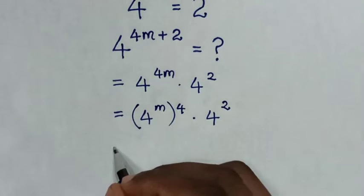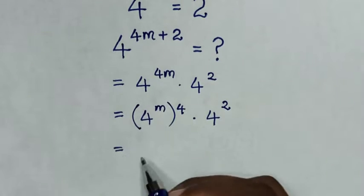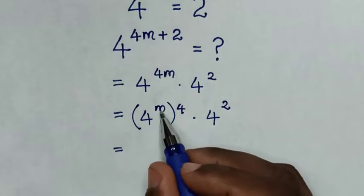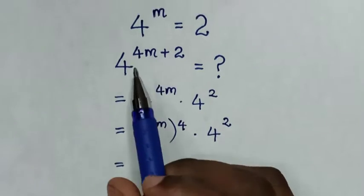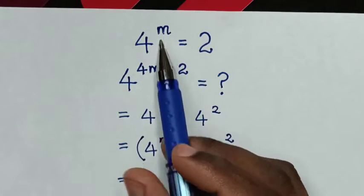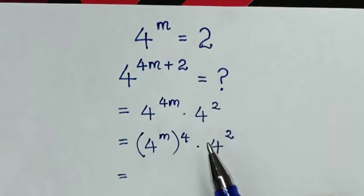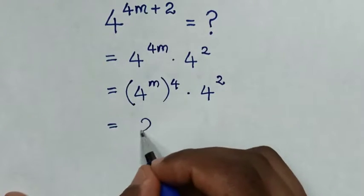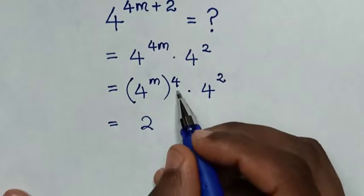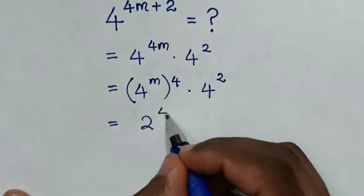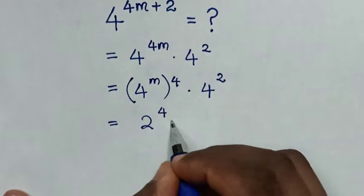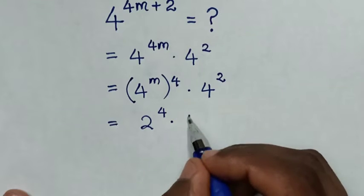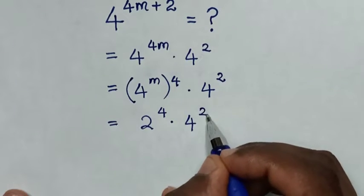From here, 4 power of m — and 4 power of m is equal to 2 — so we'll substitute here 2, then power of 4, then times 4 power of 2.